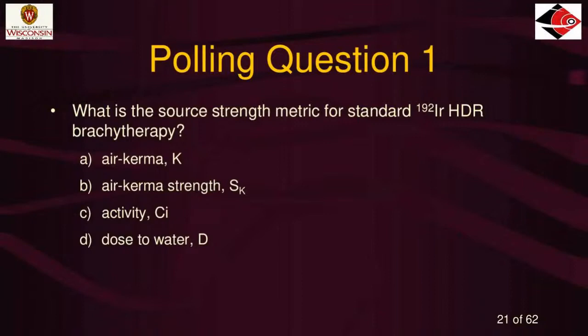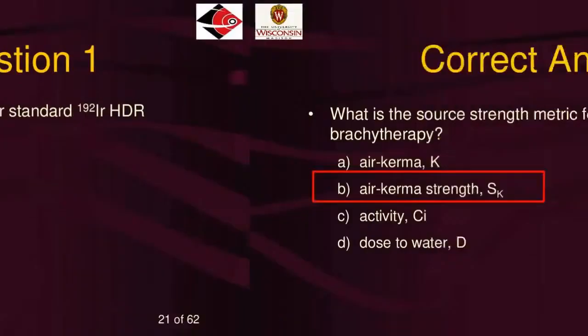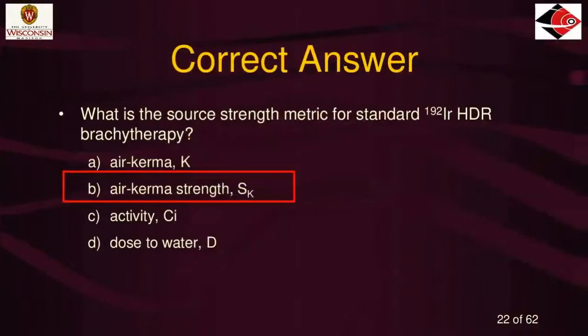Let's go ahead and review the answer. The correct answer is B, air kerma strength. Everybody's awake and paying attention — hopefully the questions get a little more challenging. The standard for an iridium source is definitely air kerma strength, measured with that seven-distance technique.